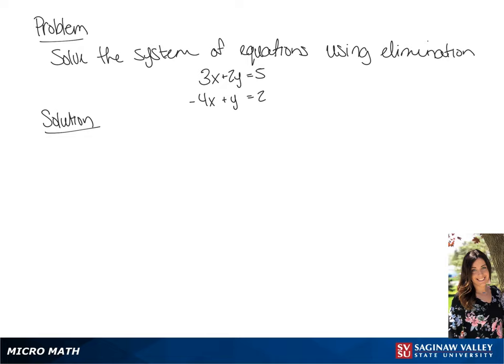We're going to solve the system of equations using elimination. The first thing we're going to do is multiply the first equation by 4 and the second by 3 so that we can cancel the x's out.